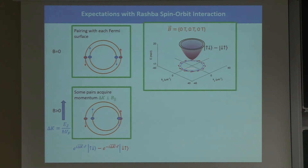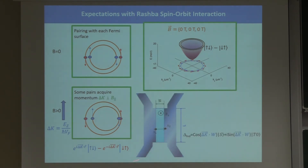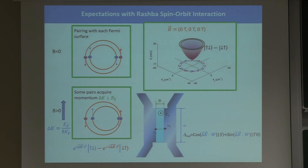If we look at what happened to our singlet wave function, the up-down component acquires a finite momentum — moves a little to the right — and the down-up acquires momentum in the opposite direction. So this wave function is no longer a simple singlet. We can write it as a cosine of Δk·W (W being the distance between the superconductors) times a singlet component, plus a sine component times a triplet. You already see the oscillatory nature of this order parameter — very much like the FFLO phase — with the two order parameters oscillating out of phase: when one peaks, the other vanishes.